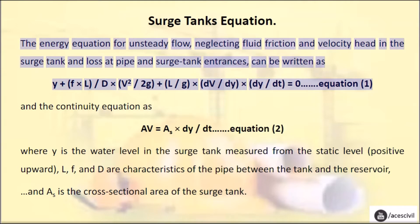The energy equation for unsteady flow, neglecting fluid friction and velocity head in the Surge Tank and loss at pipe and Surge Tank entrances, can be written as: Y + (F × L / D) × (V² / 2g) + (L/g) × (dV/dY) × (dY/dt) = 0.